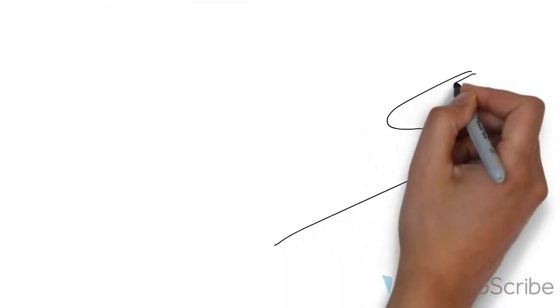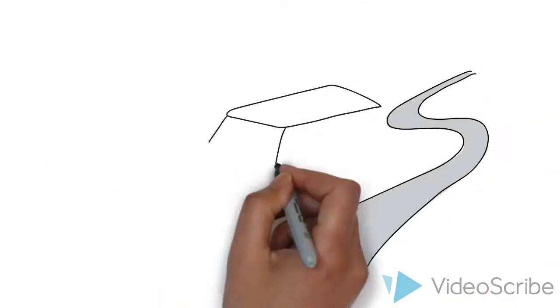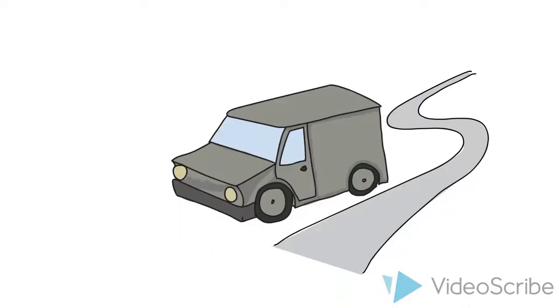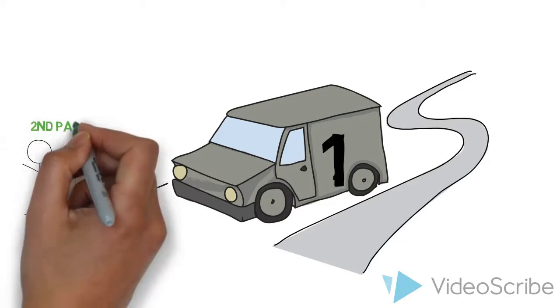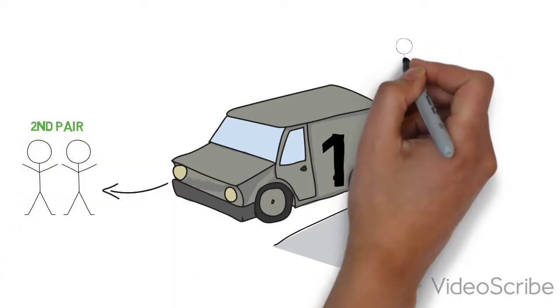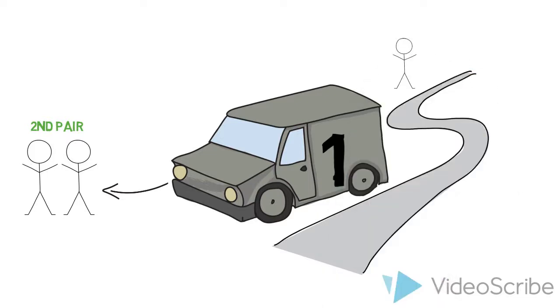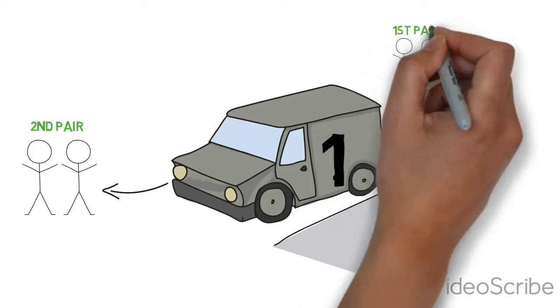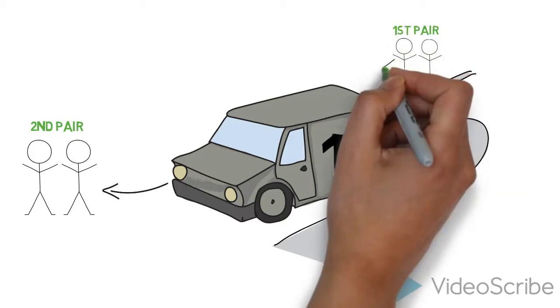While the van waits for the first pair, the second pair will hop out and start running. Once done their leg, the first pair will get in the van. Van 1 drops pairs in this format until the halfway point.